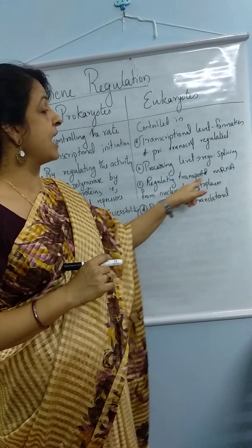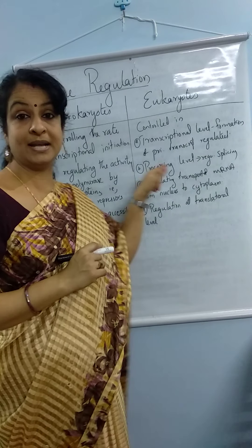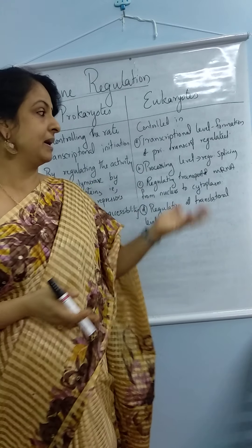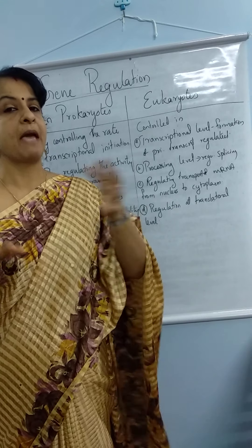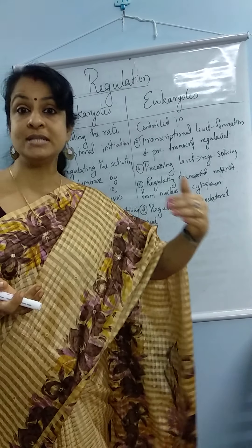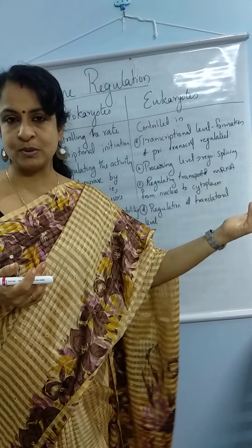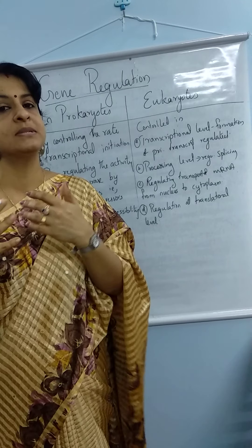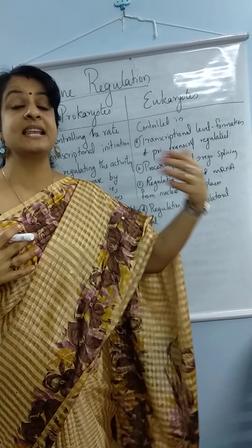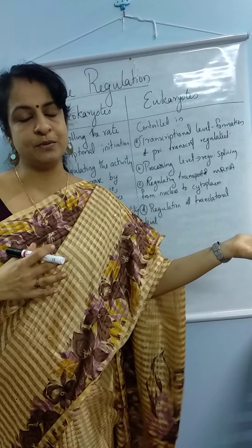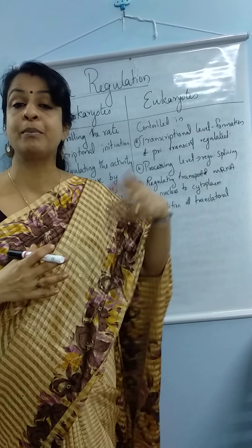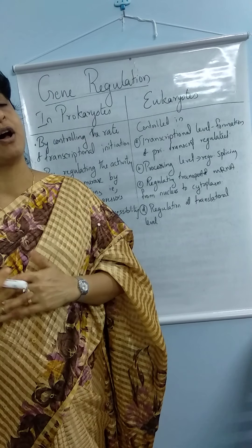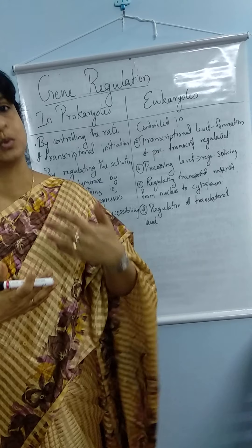The third way is by regulating the transport of mRNA from the nucleus to the cytoplasm. In prokaryotes everything happens in the cytosol, but in eukaryotes mRNA is formed in the nucleus and must be transported to the cytoplasm for translation. Even though the RNA is formed, it may not be allowed to reach the cytoplasm, and thus the gene will not be expressed in the form of protein.